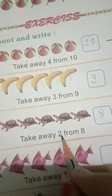Take away 2 from 8. So you will write 2 in the next box. Take away 2: 1, 2. Now count: 1, 2, 3, 4, 5, 6. So write down 6. Your answer is 6. 8 minus 2 is equal to 6.